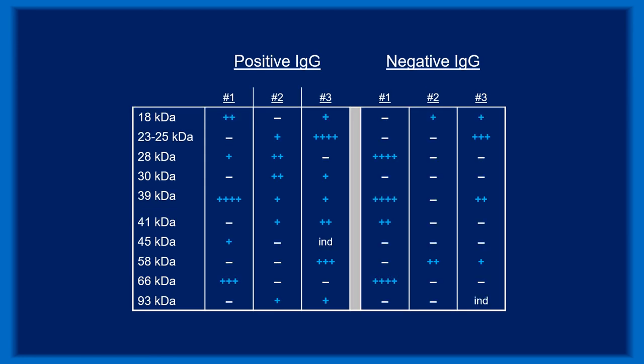Interpreting IgG blots is more complicated because there are 10 different antigen-antibody bands to examine. The first three columns illustrate positive results with 5, 6, and 7 positive bands respectively. Band intensity does not factor into the test interpretation. The last three columns represent negative results — the first of these is very close to satisfying the 5 of 10 criteria with 4 intensely positive bands.